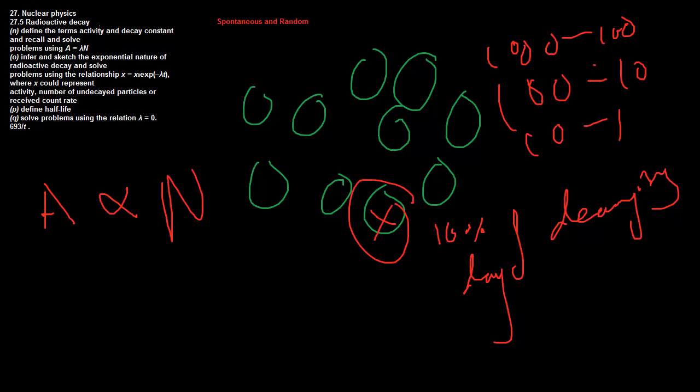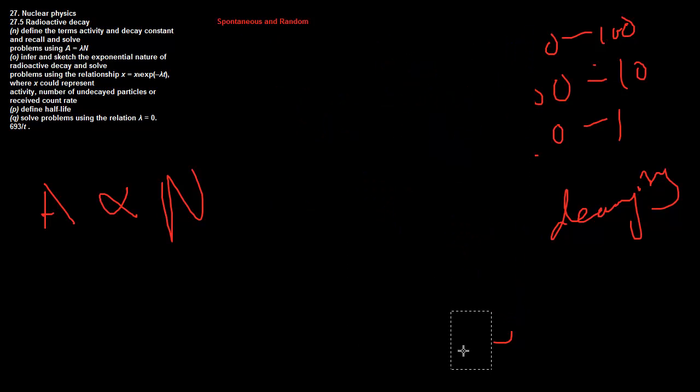And this kind of gives us this formula here: A equals lambda N. So let's take a closer look at this. We have to define the term activity and decay constant. So let's go ahead and do that.